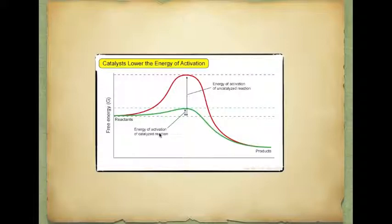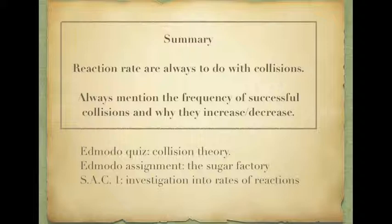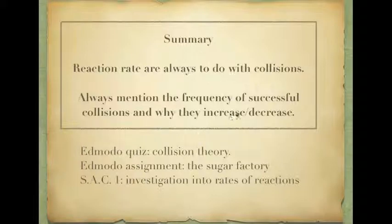That's the end of the slideshow. We've covered reaction rates — they're always to do with the number of successful collisions. When explaining why something reacts faster, you always need to mention the frequency of successful collisions and explain why they increase or decrease. My suggestion is to write down a brief summary of the four different ways of increasing the rate of reaction — surface area, temperature, concentration, and catalyst — and write a sentence or two about why each one increases the frequency of successful collisions.